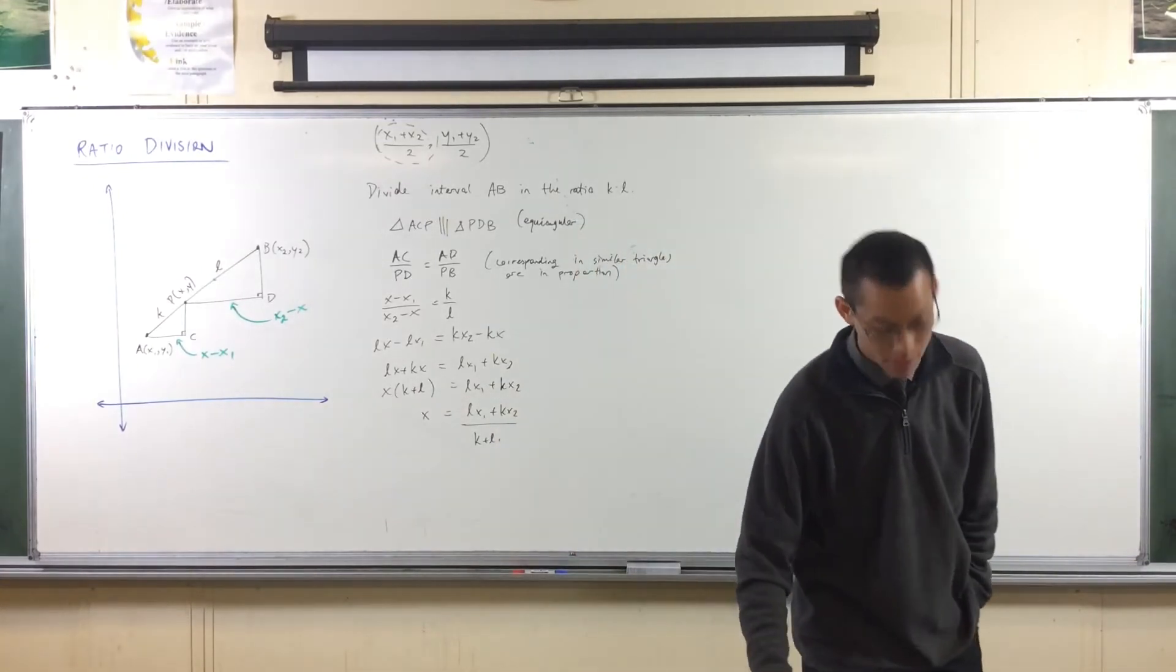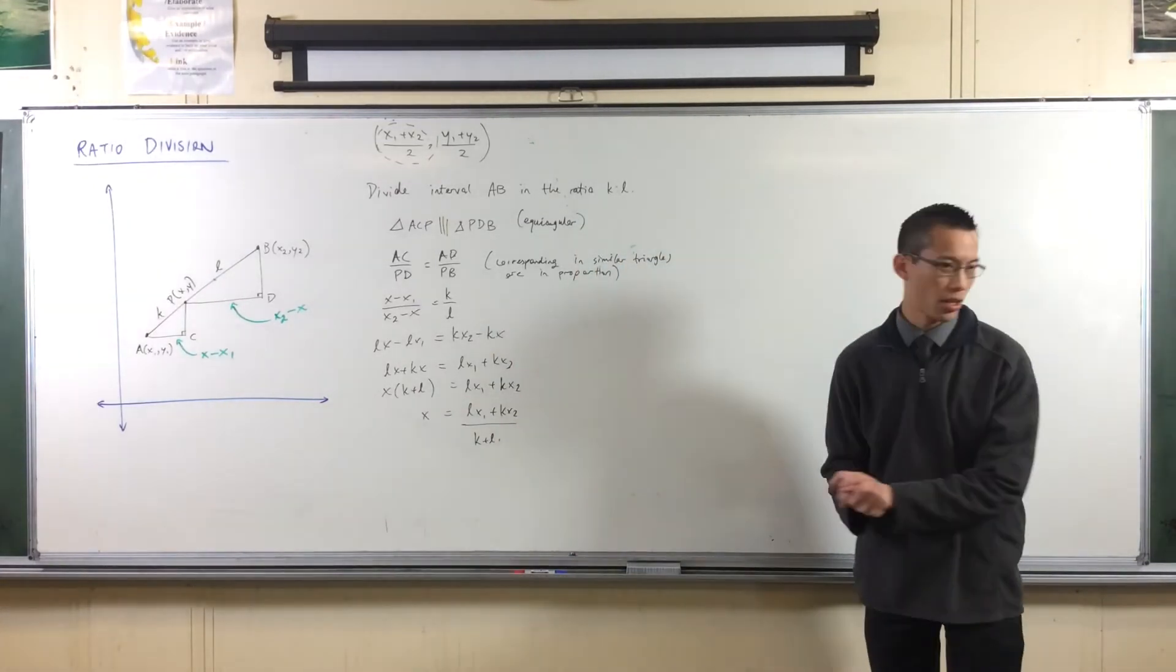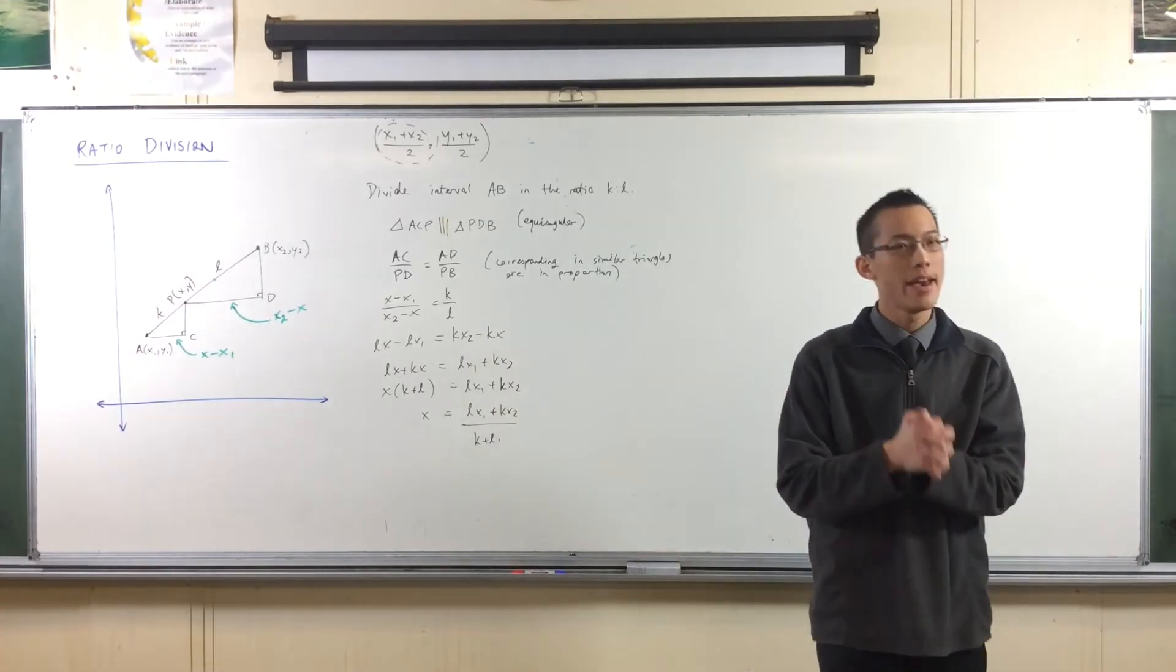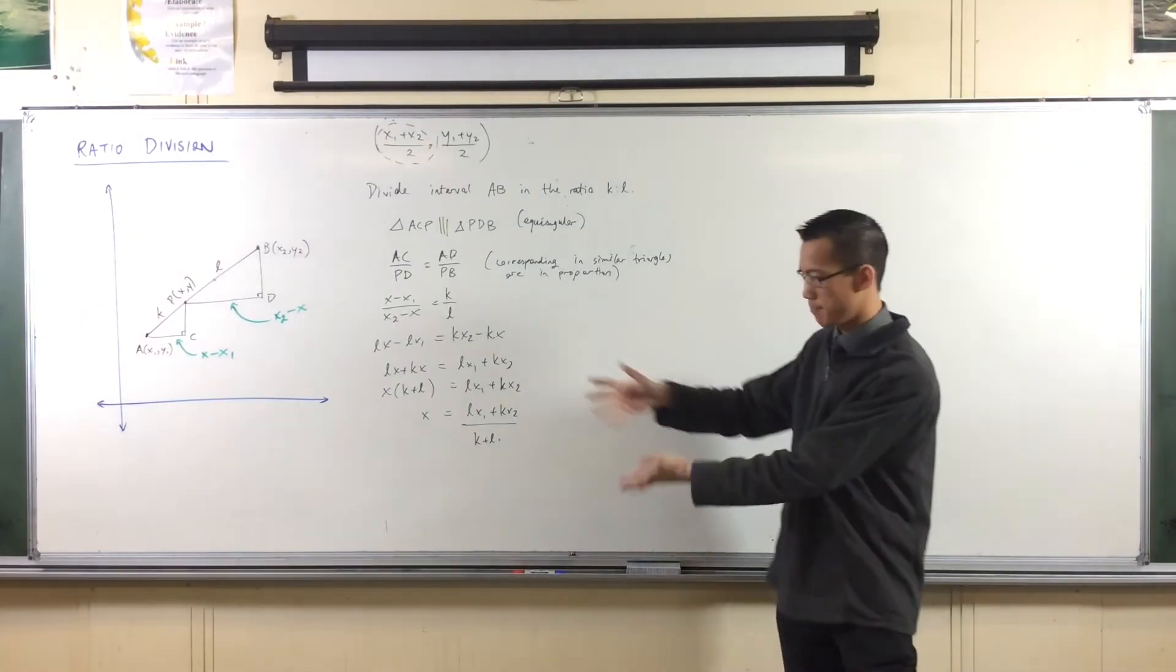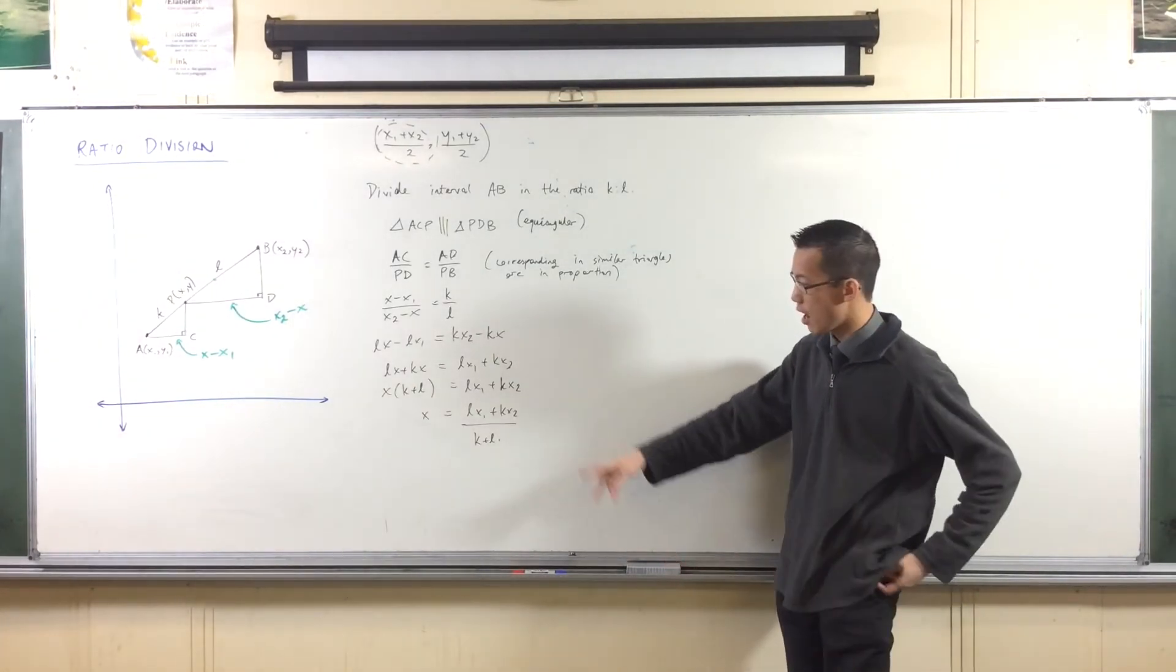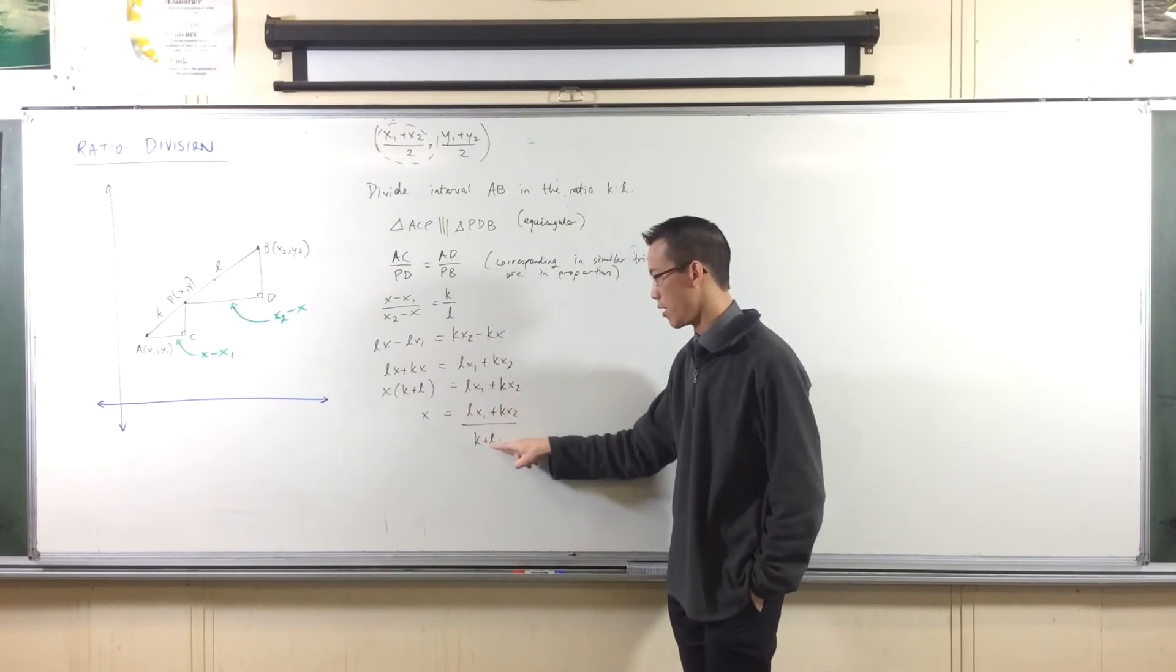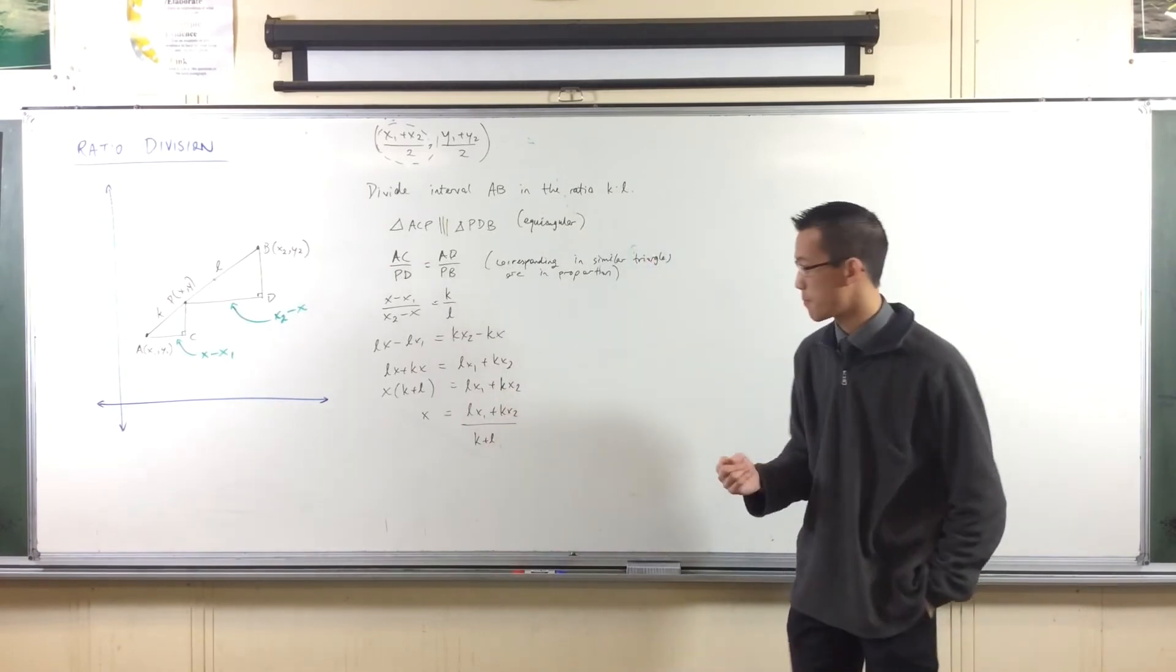Now, there are a couple of things to notice. Number one, I don't need to go through this whole process again. For the y values, it will play out exactly the same, but with y's instead of x's. So I can just use this and say, similarly, my y-coordinate will be ly1 plus ky2 on k plus l. That'll still be the same. Okay.